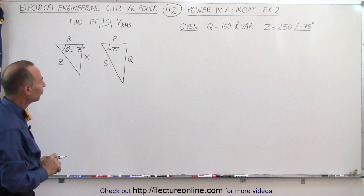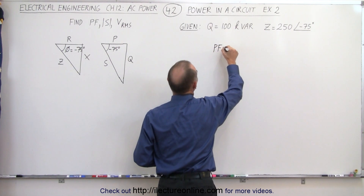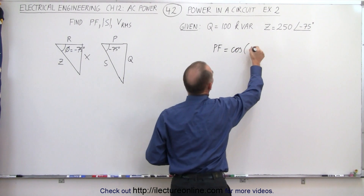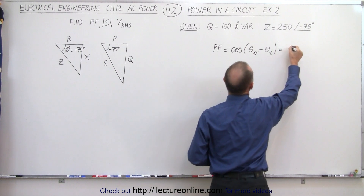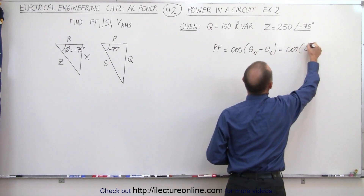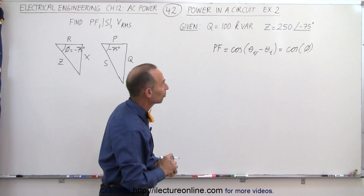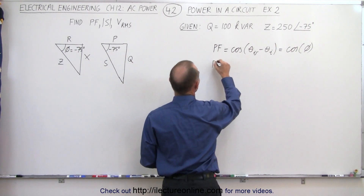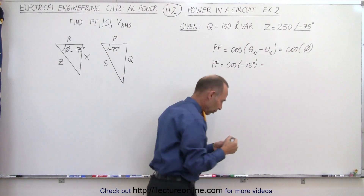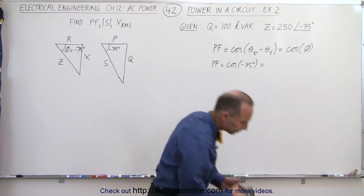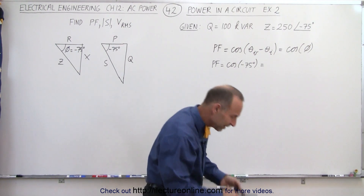What do we know? We have an equation for the power factor. By definition, the power factor is equal to the cosine of the phase angle of the voltage minus the phase angle of the current, which means it's the cosine of the phase angle phi, given to us from the impedance equation. So the power factor is equal to the cosine of minus 75 degrees, which is the same as the cosine of 75 degrees — we get 0.259.